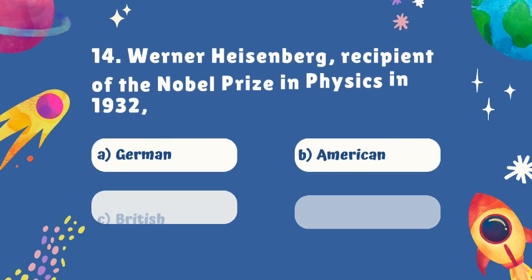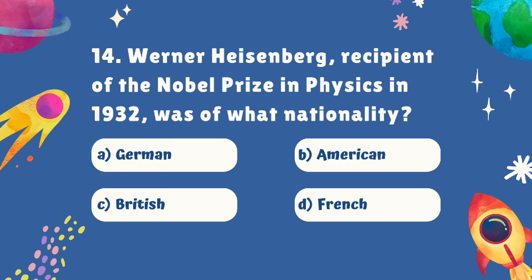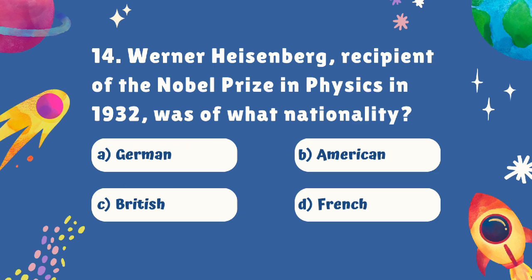Question number fourteen. Werner Heisenberg, recipient of the Nobel Prize in Physics in 1932, was of what nationality? Is it A. German, B. American, C. British, or D. French? The correct answer is A. German.